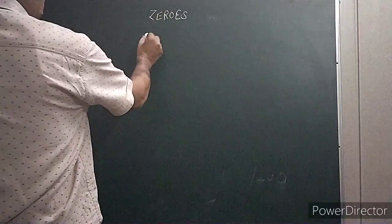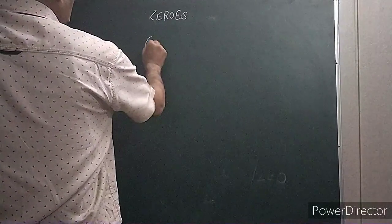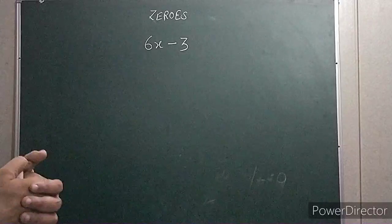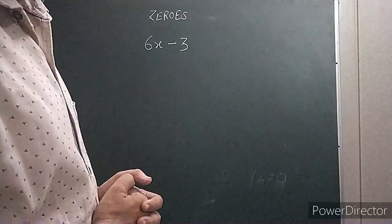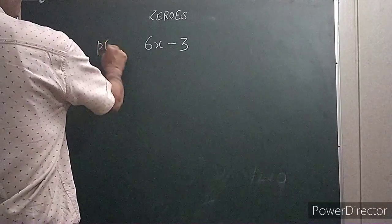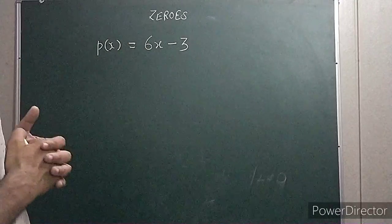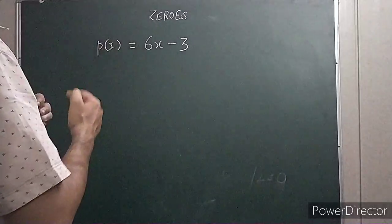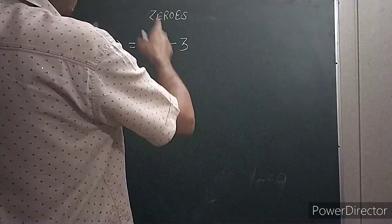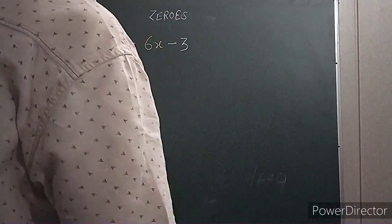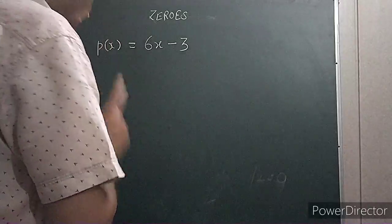Let us say we write a linear polynomial 6x minus 3. We write it as p(x) is equal to 6x minus 3. Now I will try to plot this particular polynomial, or this linear expression, on the graph paper.